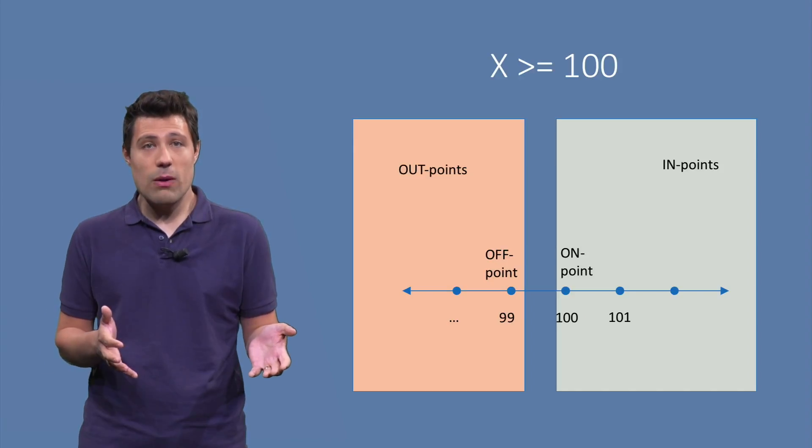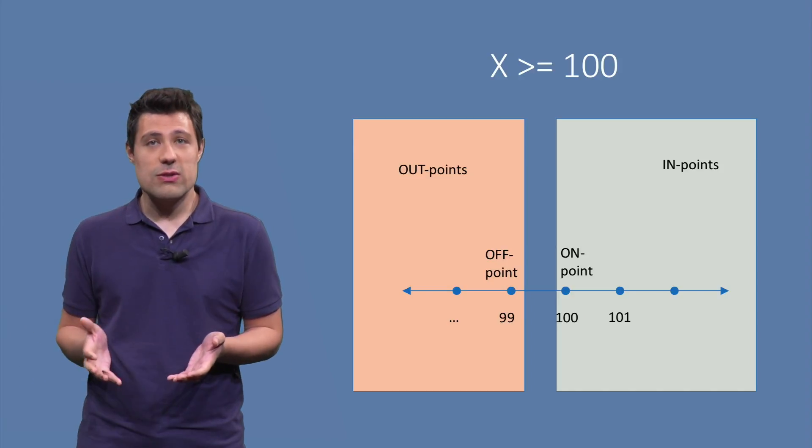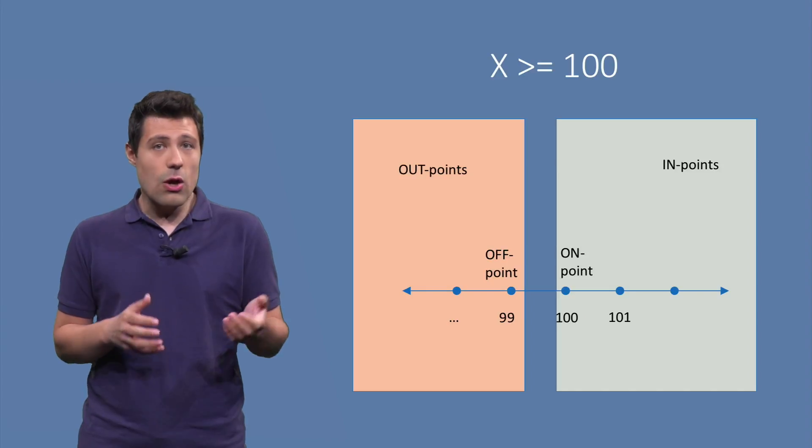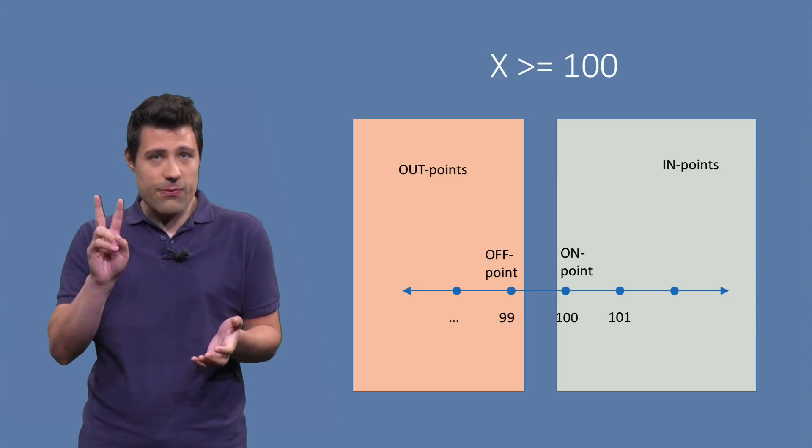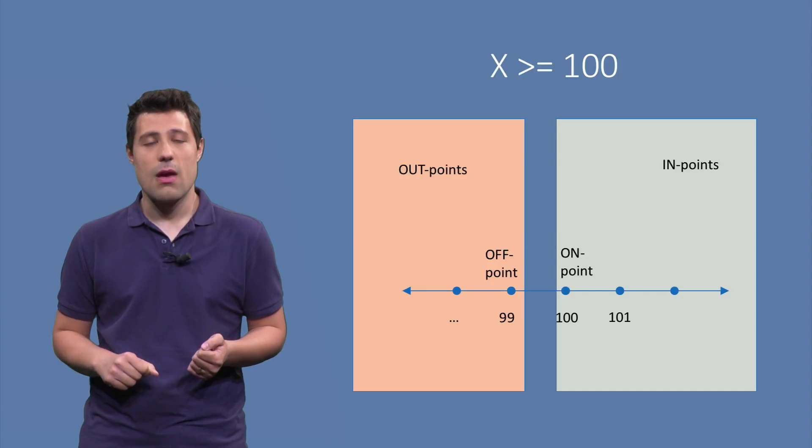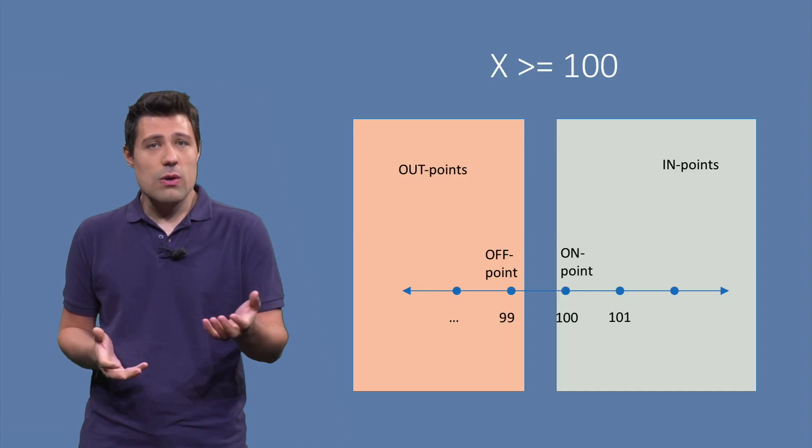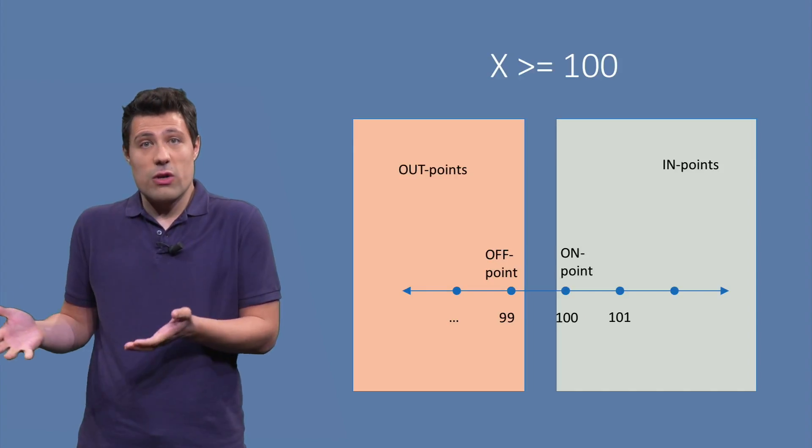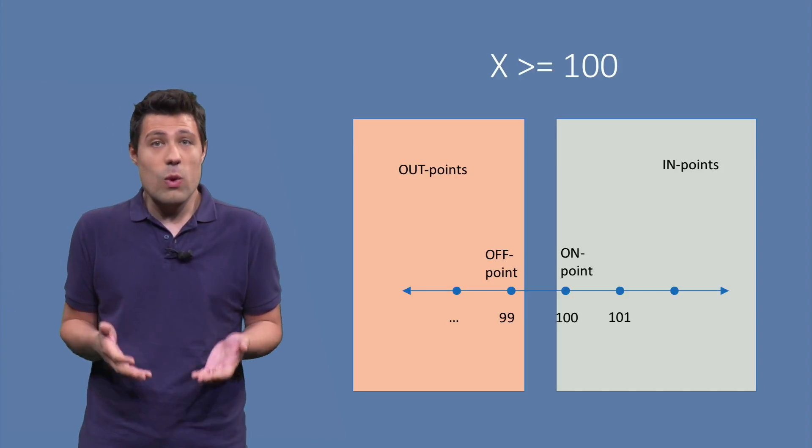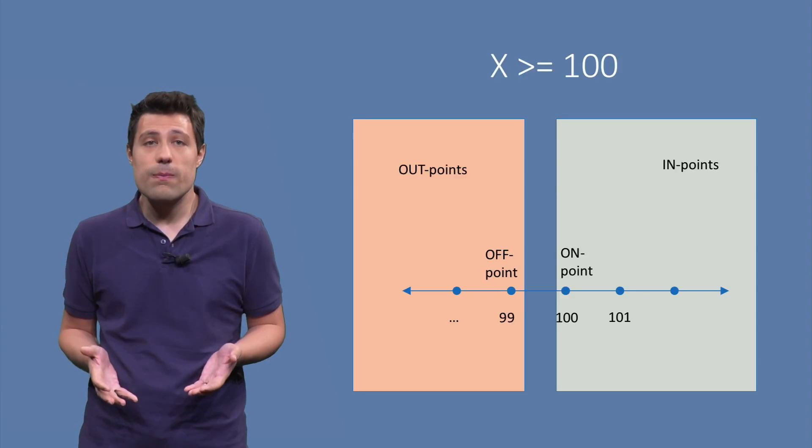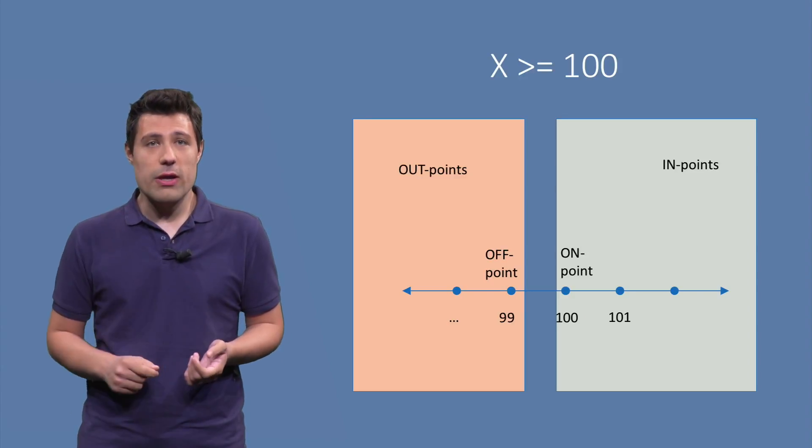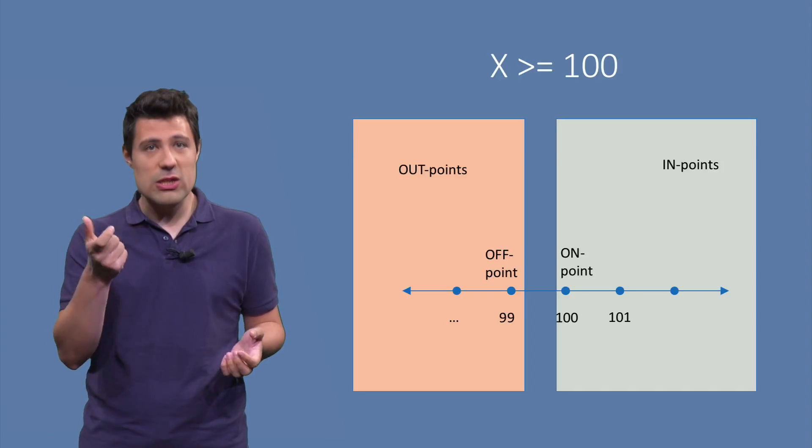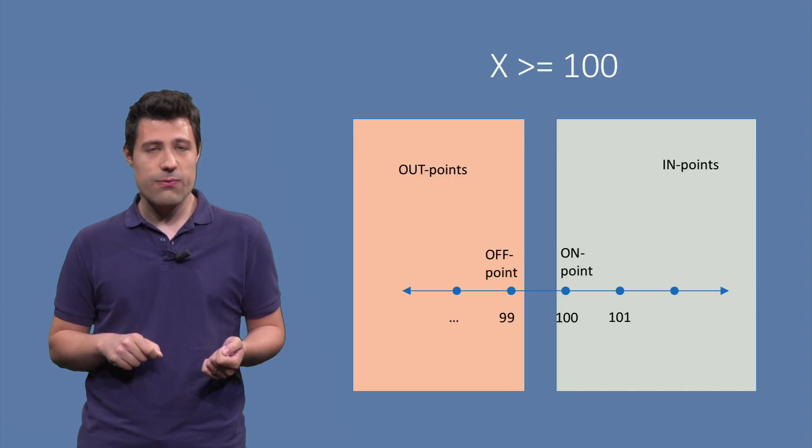Then we can also think about the off point, which is the opposite of the on point. The off point is the closest number to the on point that flips the condition of the on point. So the 100 is the on point. 100 is greater than or equal to 100, so 100 makes this condition true. The off point is the nearest point to 100 that flips the condition, meaning makes the condition false.